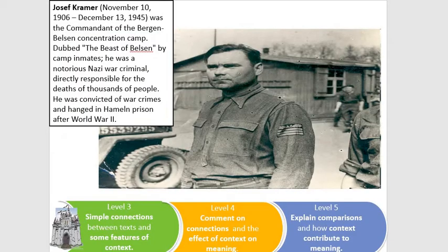So who is this man? His name is Joseph Kramer. He was the commandant — someone in charge — of the Bergen-Belsen concentration camp. He was dubbed the Beast of Belsen by camp inmates and was a notorious Nazi war criminal, directly responsible for the deaths of thousands of people. He was convicted of war crimes and hanged after World War II. I want to relate him to the poem and to the book we're reading — so who from The Boy in the Striped Pyjamas would be linked to someone like Joseph Kramer?